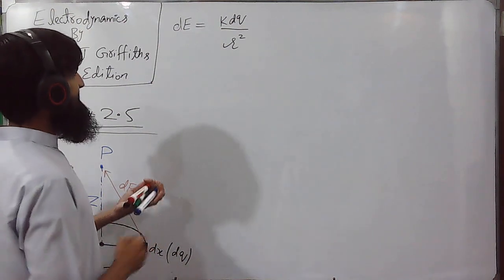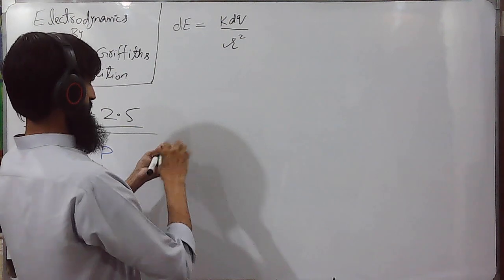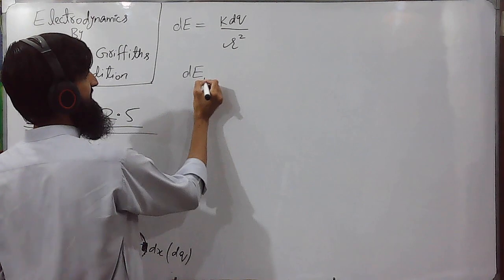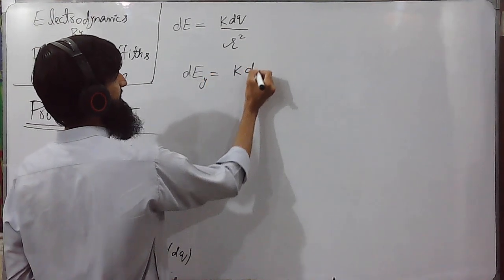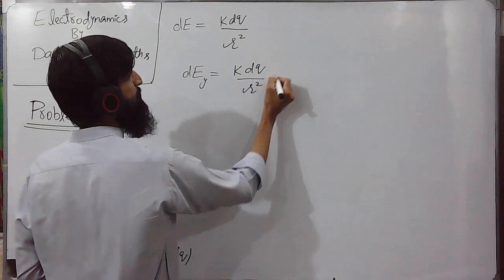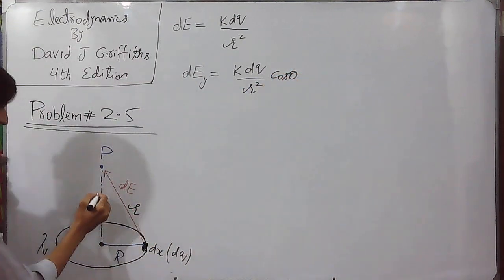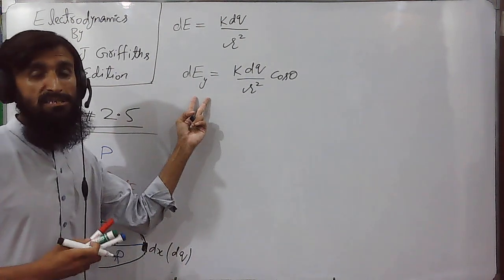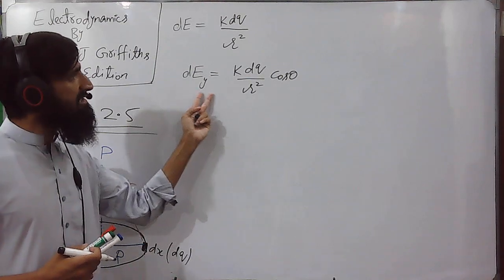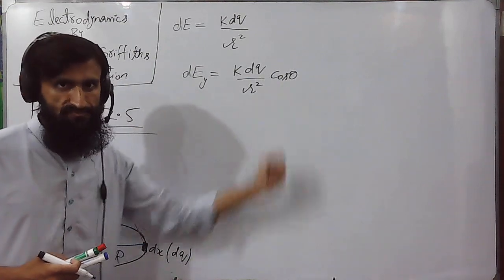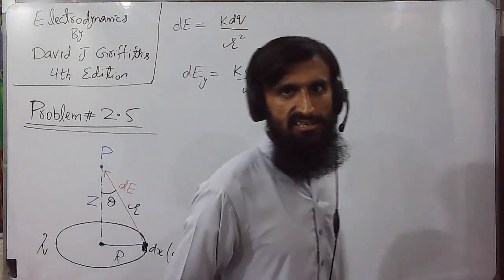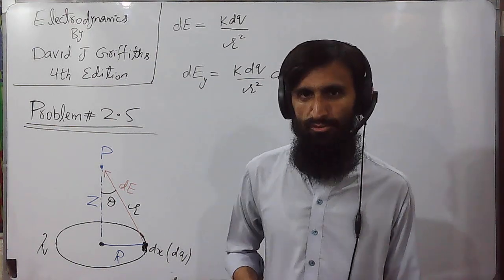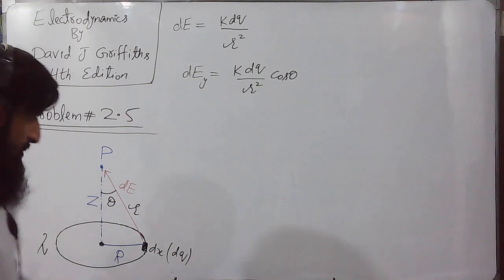In the next step, we will consider only the y-component of the electric field, dEy. That will be equal to k·dq divided by r² times cosθ, where θ is this angle. The y-component means the vertical component. The question arises: why are we considering only the y-component and not the x-component?